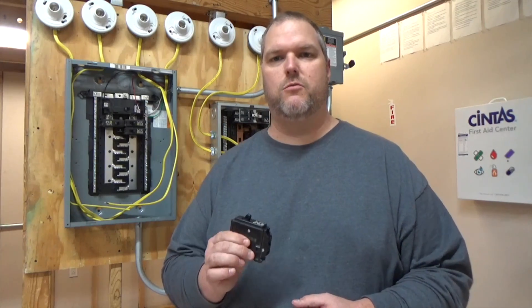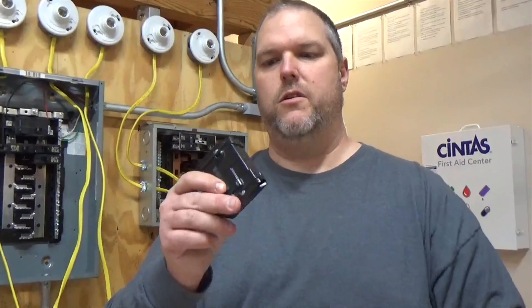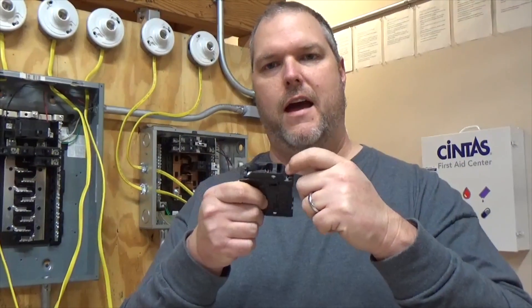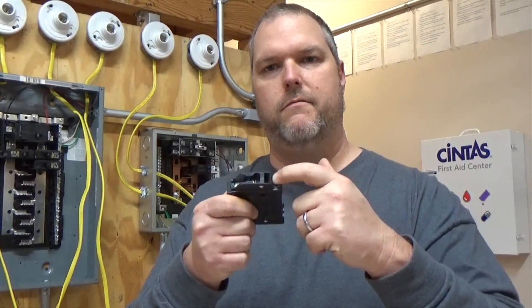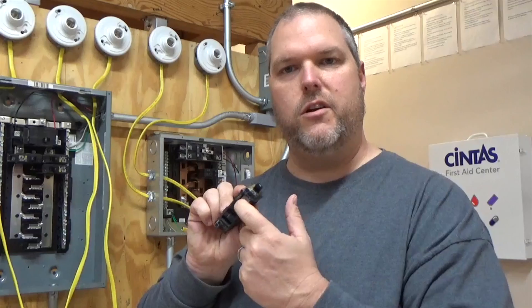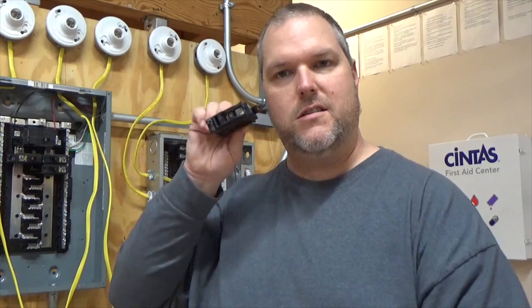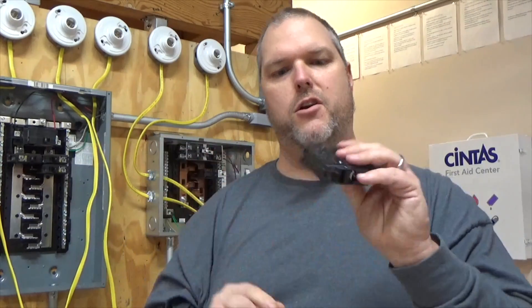When installing a single pole breaker, one of the things you have to be very concerned with is the amper size. When you look at the breaker, you're going to see an end that has like a little hook in it. When I show you in the panel, I'll show you where the little hook actually inserts into. You take the screw where you're going to land your conductor to, you're going to slide that in first and then you're going to press down.